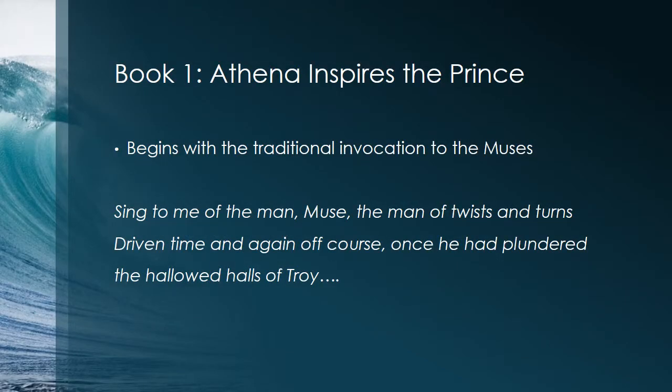It begins, as do all poems of antiquity, with the traditional invocation to the muses — the call to the divine muses to inspire the poet with the words to sing: 'Sing to me of the man, muse, the man of twists and turns, driven time and again off course once he had plundered the hallowed halls of Troy.' This tells us of the cunning and crafty Odysseus, but he is also a man of twists and turns in that his own path has been twisted and turned as he's been driven off course over and over after his victory at the Trojan War.